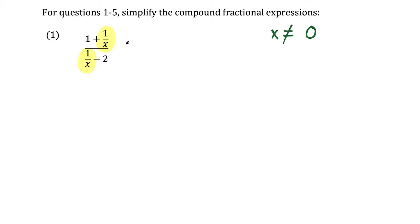Now to actually start simplifying, I'm going to multiply the top and bottom of the entire fraction by x. The reason I'm doing that is the highlighted fractions have a least common denominator of x. So when we multiply, that's going to simplify things.